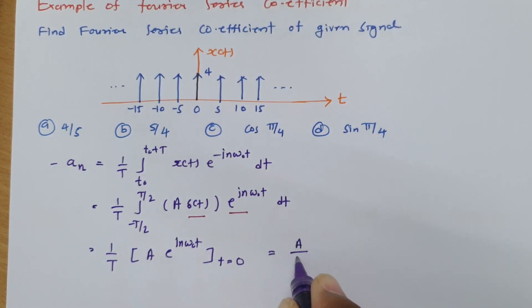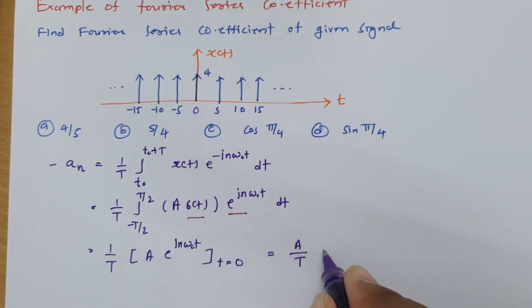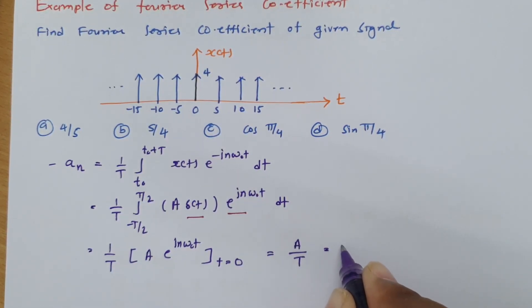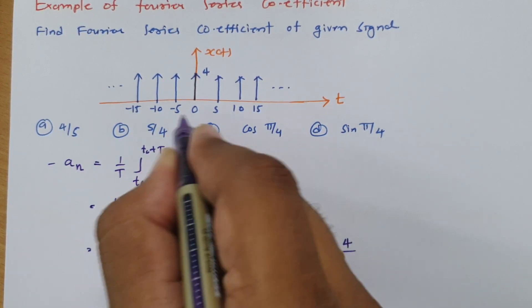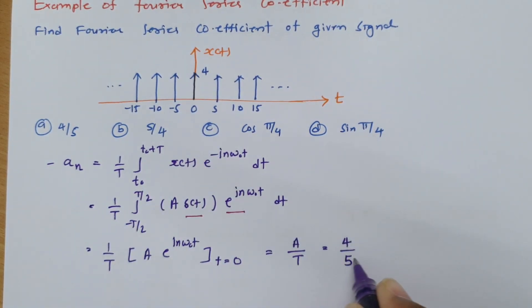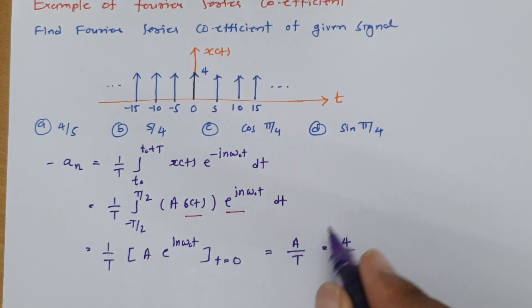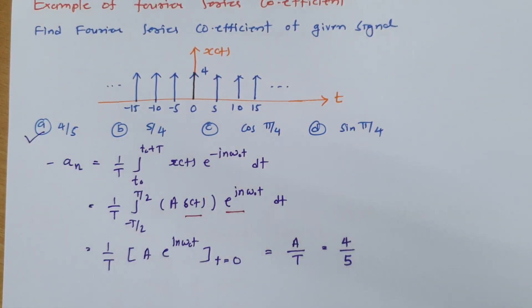Here the amplitude of impulse is 4, so the answer for this question is 4 by T. You can see the gap in between two impulses is 5, so I should write it is 4 by 5. So this coefficient value is 4 by 5, and our answer is option a, 4 by 5.